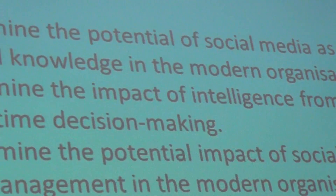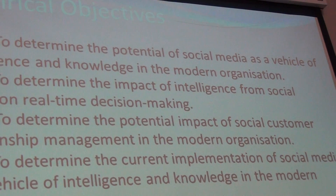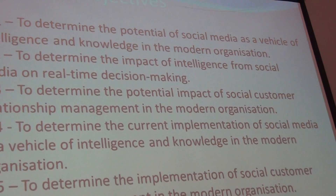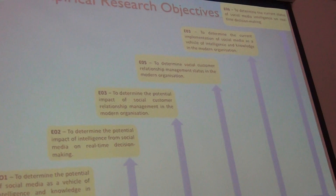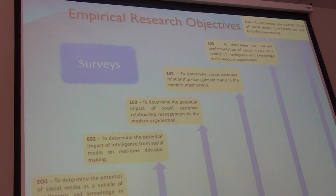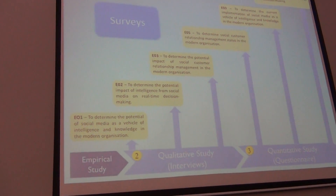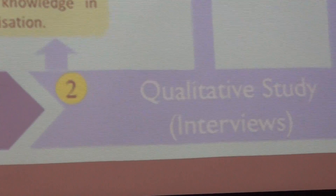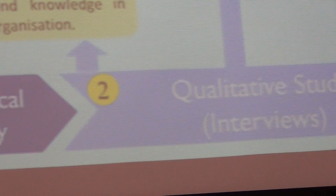Here are some possible objectives — these are the empirical objectives of a study on social media. For example, to determine the potential of social media data as a vehicle today. These are the empirical objectives — the ones that he's going to study with data, then come up with an answer to the primary objective. Sometimes you will use surveys to answer these empirical objectives. He needs data for these empirical objectives: part of those would be qualitative data and part would be quantitative data. So he's going to do a mixed method and find his data qualitatively or quantitatively.